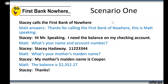Scene 1: Stacy calls the First Bank of Nowhere. Matt: Thanks for calling the First Bank of Nowhere, this is Matt speaking. Stacy: Hi, I need the balance on my checking account. Matt: I'd love to help you — can I get your name and account number? Stacy: Sure, my name is Stacy Hadaway and my account number is 1-1-2-2-3-3-4-4. Matt: Awesome — can you give me your mother's maiden name? Stacy: Yes, my mother's maiden name is Cooper. Matt: All righty — it's showing here that your balance is $2,352.27. Stacy: Awesome, so that's $2,352.27? Matt: That's correct. Stacy: Great, thanks so much. Matt: You're very welcome, have a good day.